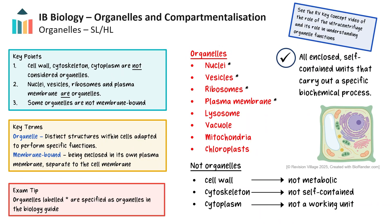So let's look at what constitutes an organelle and importantly what doesn't. Parts of the cell that are considered organelles are the nucleus, vesicles, ribosomes and the plasma membrane that encloses the whole cell. The more obvious larger membrane-bound structures like the lysosome, vacuole, mitochondria and chloroplasts are also classed as organelles. They are all enclosed, self-contained units that carry out a specific biochemical process, enclosed by their own plasma membrane or including a membrane which creates spaces within the organelle for distinct reactions to take place in isolation from other cellular reactions.